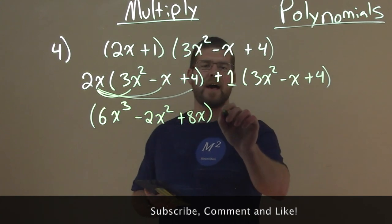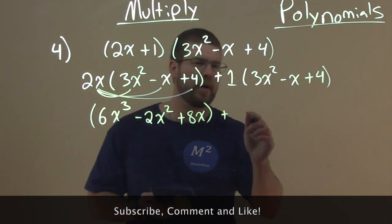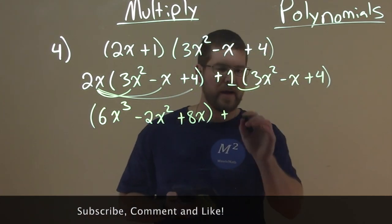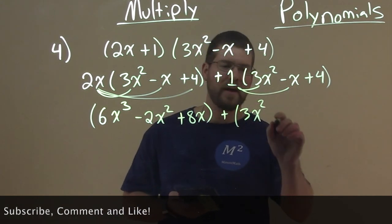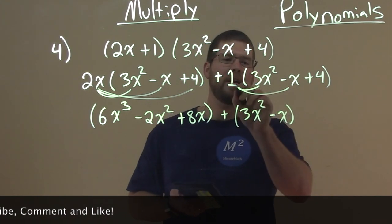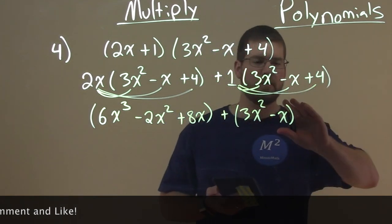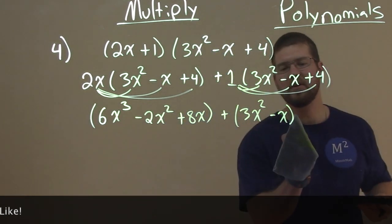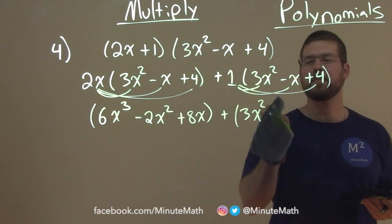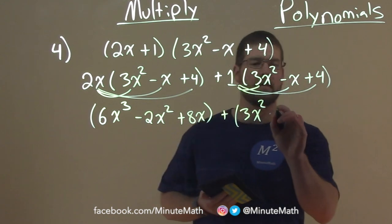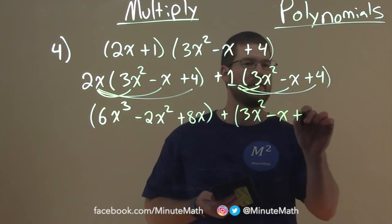All right. Now, let's add the second distributive that's going on here. 1 times 3x squared is 3x squared. 1 times a minus x is a minus x. And 1 times a 4 is just good old 4. So we have a minus x and a plus a 4.